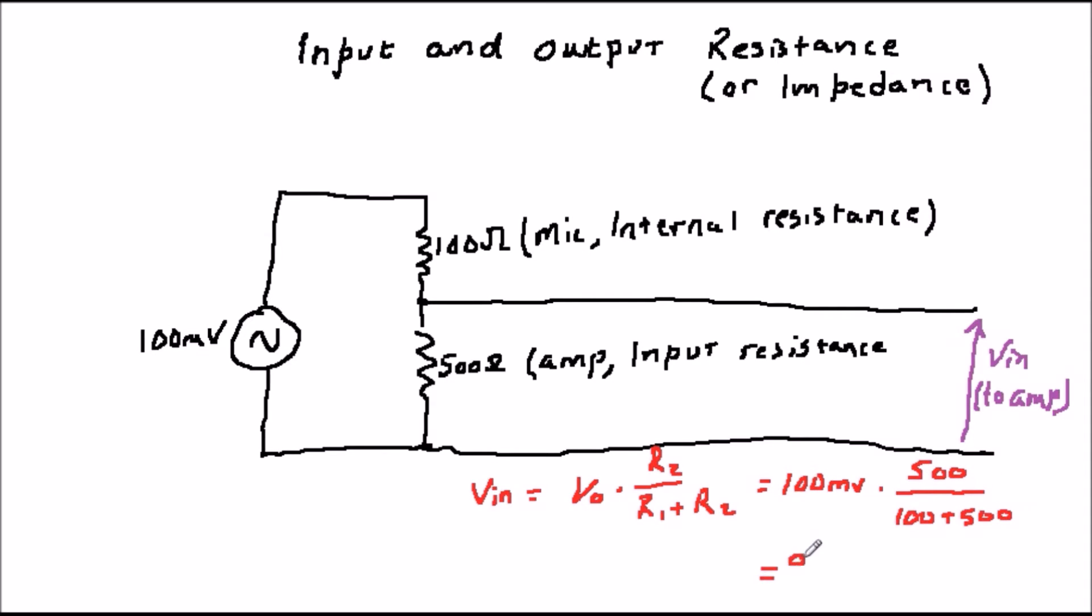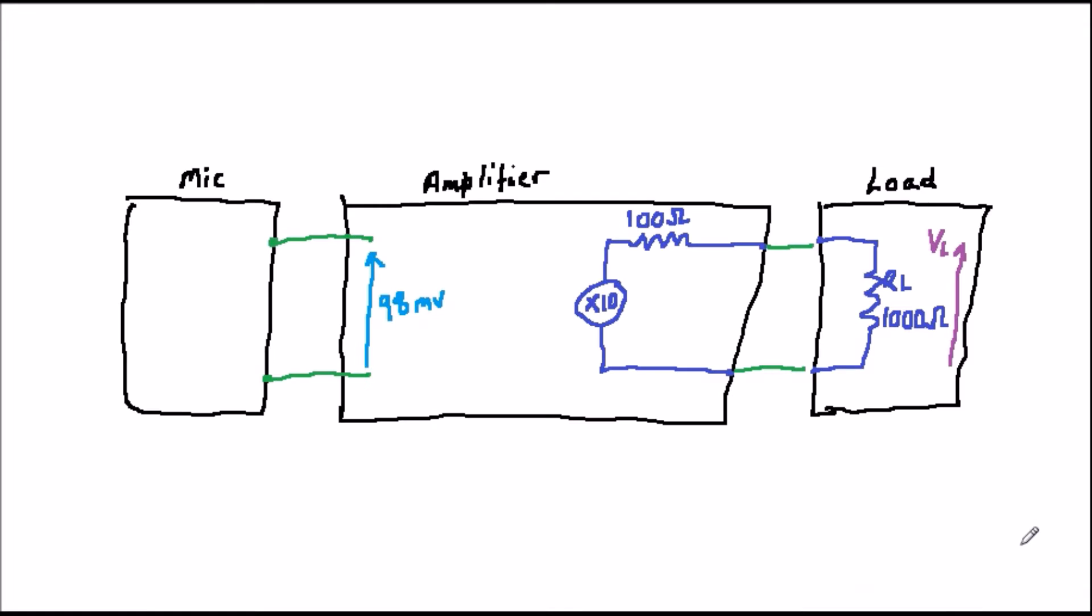So, although we were expecting 100 millivolts at the input of our amplifier, only 98 millivolts actually arrived. This is because we are losing the extra 2 millivolts across the internal resistance of the microphone.